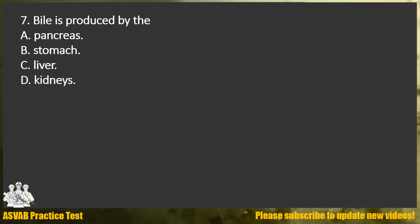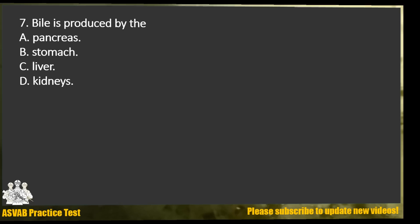Question 7. Bile is produced by the: A. Pancreas. B. Stomach. C. Liver. D. Kidneys.